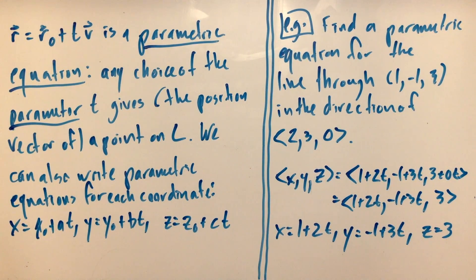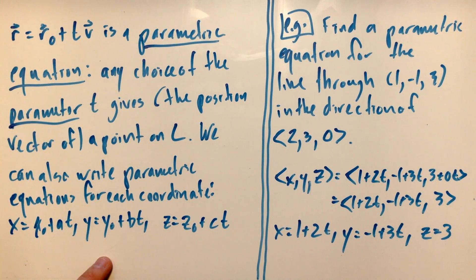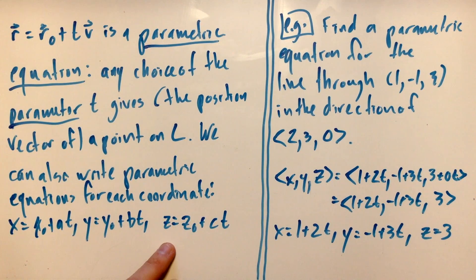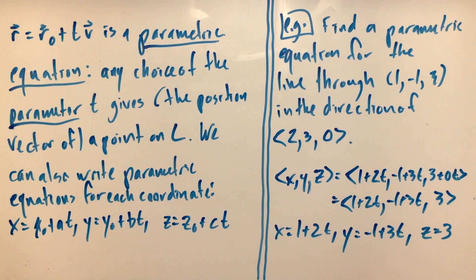We can also write parametric equations for each coordinate, and this is very common. Instead of thinking of it as a vector equation, we can write down an equation for each coordinate: x = x0 + at, y = y0 + bt, and z = z0 + ct. We get a point by plugging the same value of t into each equation and treating these as the coordinates of the point.